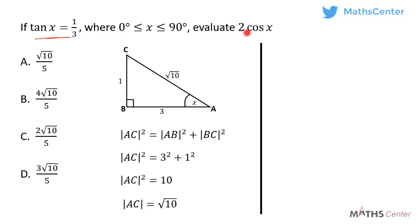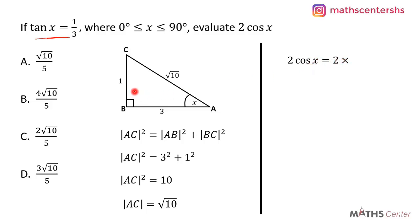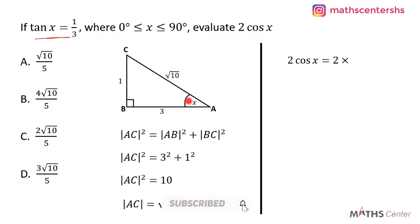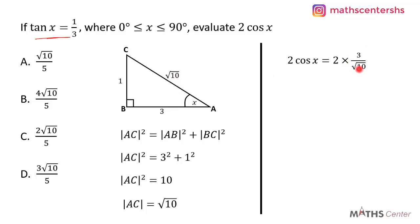The question says we should find 2 cos x. 2 cos x will be equal to 2 times cos x, so we have to find cos x from the right angled triangle. We know that cos is adjacent divided by hypotenuse. Considering the angle x, AB which is 3 is the adjacent side and AC which is square root of 10 is the hypotenuse. So cos x is equal to 3 divided by square root of 10.